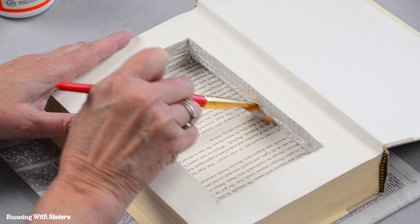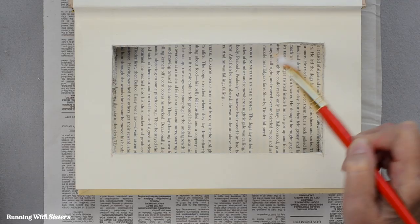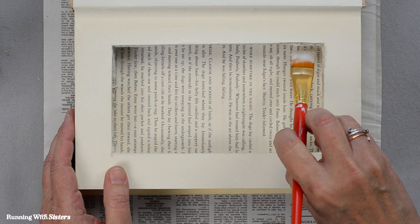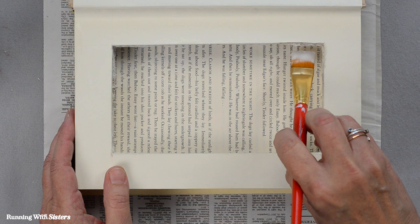Or you could use pretty paper like a scrapbook paper with a design that you like to line the inside. Or if you like the way it looks with the cut edges, and some of my cut edges look great, and if yours came out great, you could just do this Mod Podge layer and that'll be enough to line the inside of your book box.